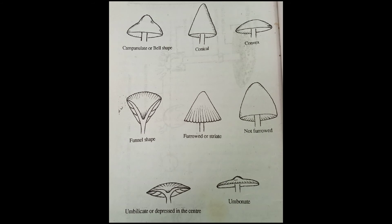According to the shape of the pileus, the mushroom can be put into 8 groups: convex, conical, egg-shaped, umbonate, campanulate or bell-shaped, umbilicate or depressed in the center, funnel-shaped, and straight or furrowed and not furrowed.